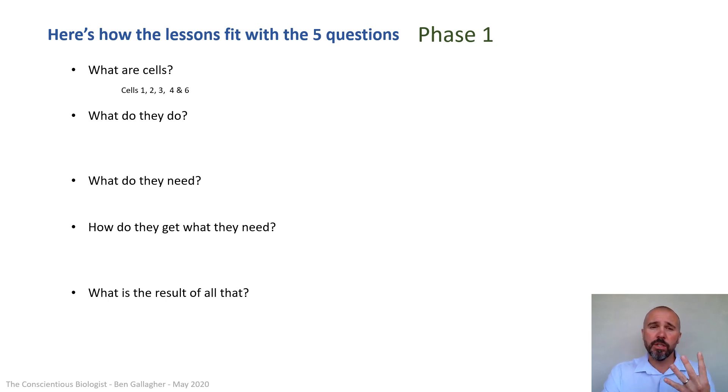So what are cells? You need to watch the cells one, two, three, four, and six video. What do they do is covered in cells five, that's mitosis, cell division, the three proteins lectures, and the two photosynthesis and three respiration lectures. That covers pretty much all of what cells do, certainly at GCSE level. What do they need? There's just one lesson you need to watch for this, and it comes right at the end of phase one. It's a summary and overview of cell biology, because that video links up huge amounts of all those other ones on that list.